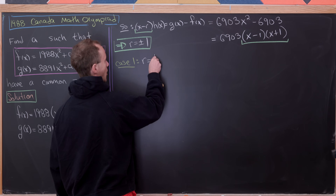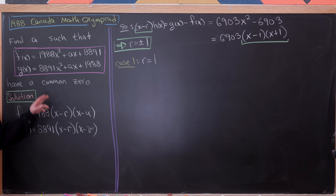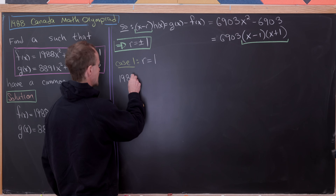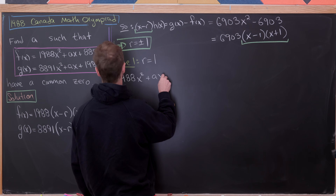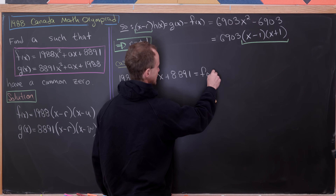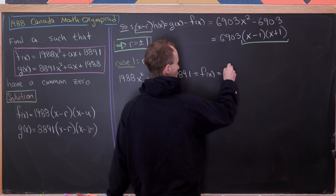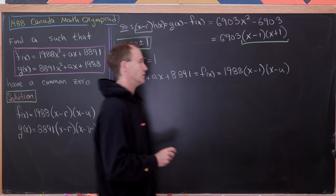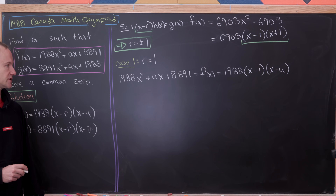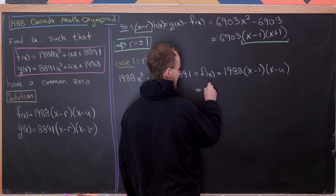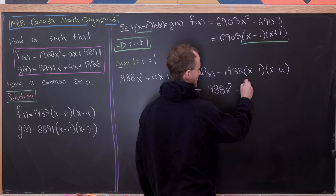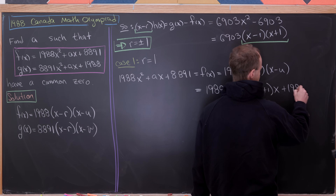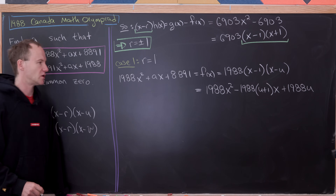For the first case, let r = 1, and let's exploit that using f(x). So 1988x² + ax + 8891 = 1988(x - 1)(x - u), since we know 1 is a root and u is the other root. Multiplying out the right-hand side, we get 1988x² minus 1988(u + 1)x plus 1988u.